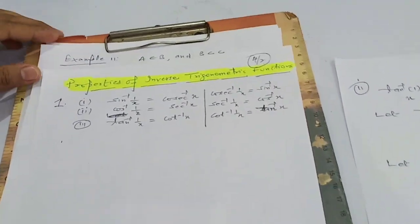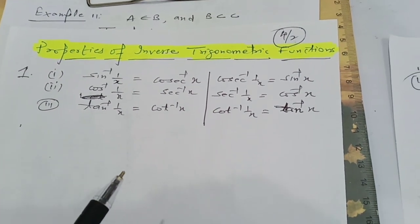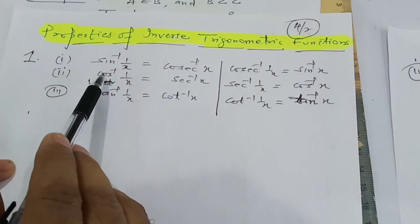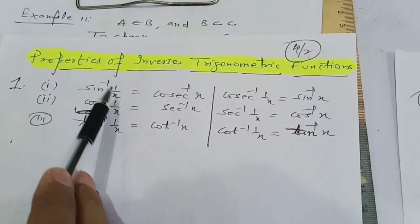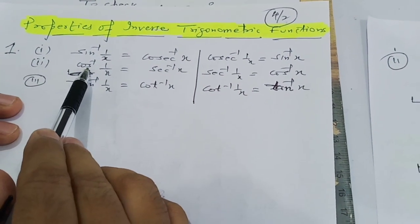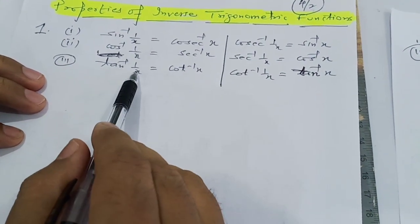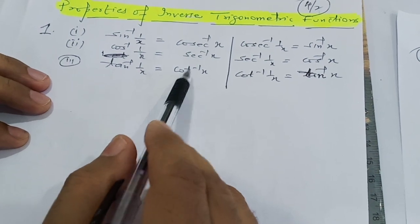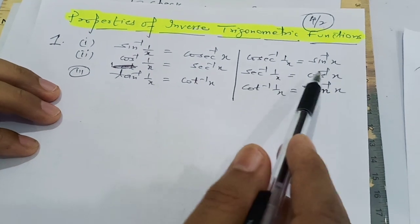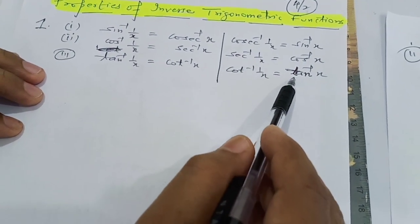Now moving on to the properties of inverse trigonometric functions. The first property states: sin⁻¹(1/x) = cosec⁻¹(x), cos⁻¹(1/x) = sec⁻¹(x), tan⁻¹(1/x) = cot⁻¹(x), cosec⁻¹(1/x) = sin⁻¹(x), sec⁻¹(1/x) = cos⁻¹(x), and cot⁻¹(1/x) = tan⁻¹(x).